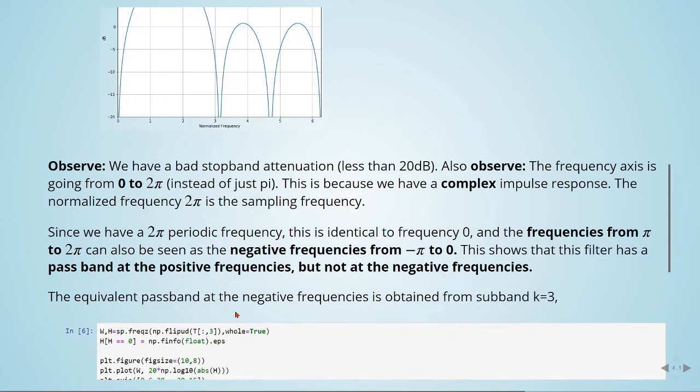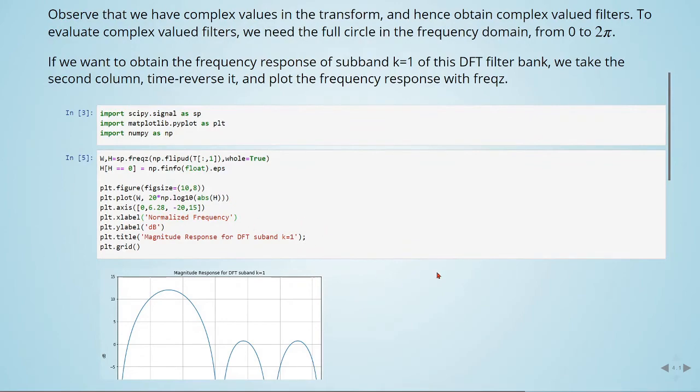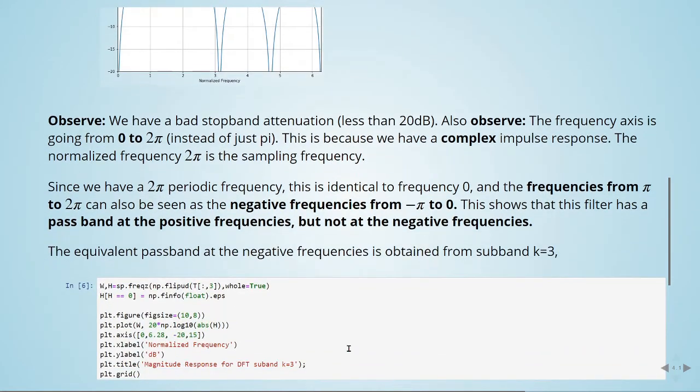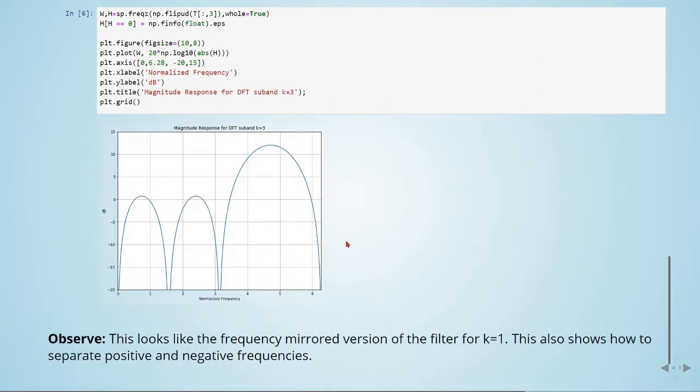The equivalent pass-band at the negative frequencies is obtained from sub-band k equals 3. So first we plotted sub-band k equals 1, now we move to sub-band k equals 3. We do the same procedure, calculate the frequency response, and we have the magnitude response for the DFT sub-band k equals 3.